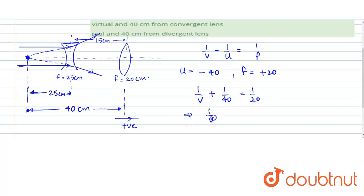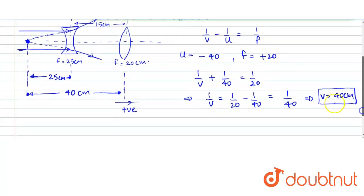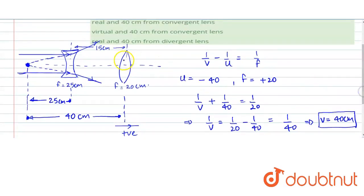So that means 1 by V equals 1 by 20 minus 1 by 40, which is 1 by 40. So from here, V value will become 40 cm. And since this V is positive, that means the rays are converging at this point. So the final image will be at 40 cm from the converging lens.